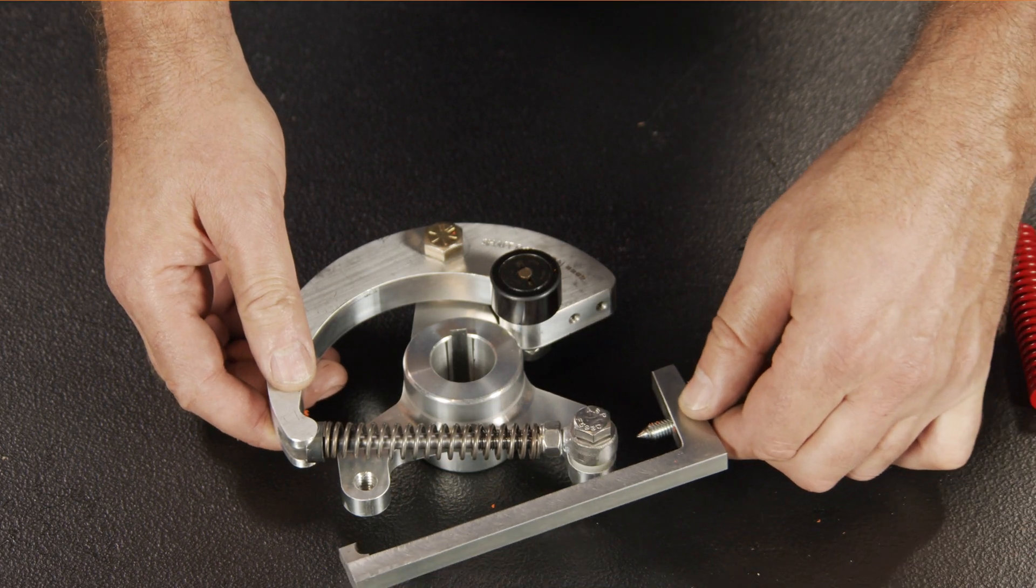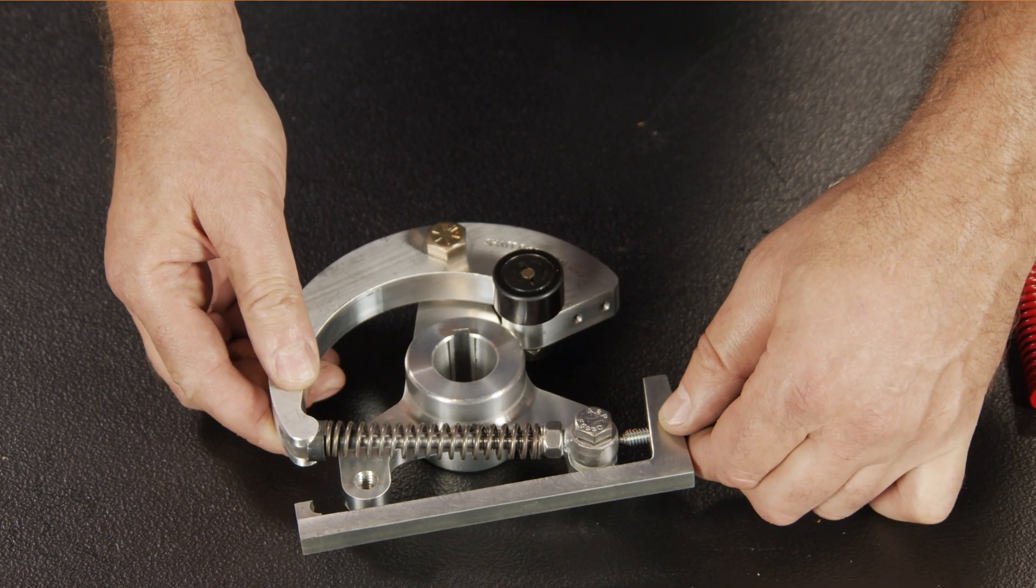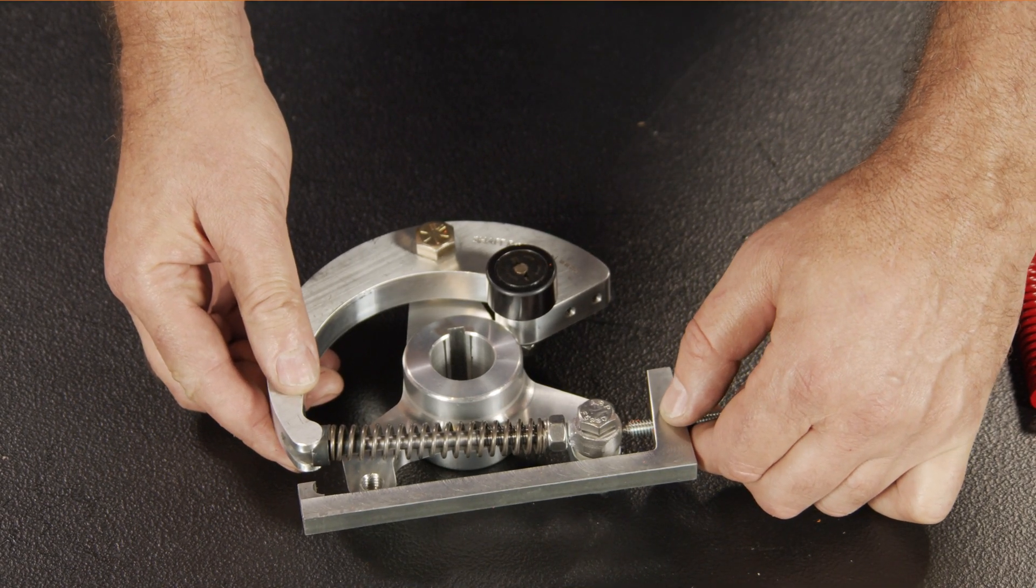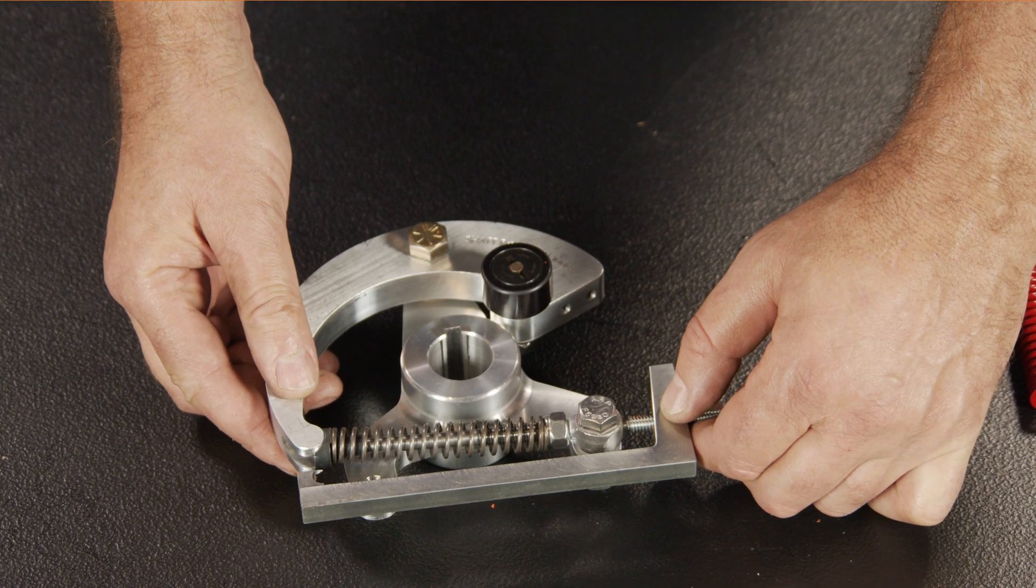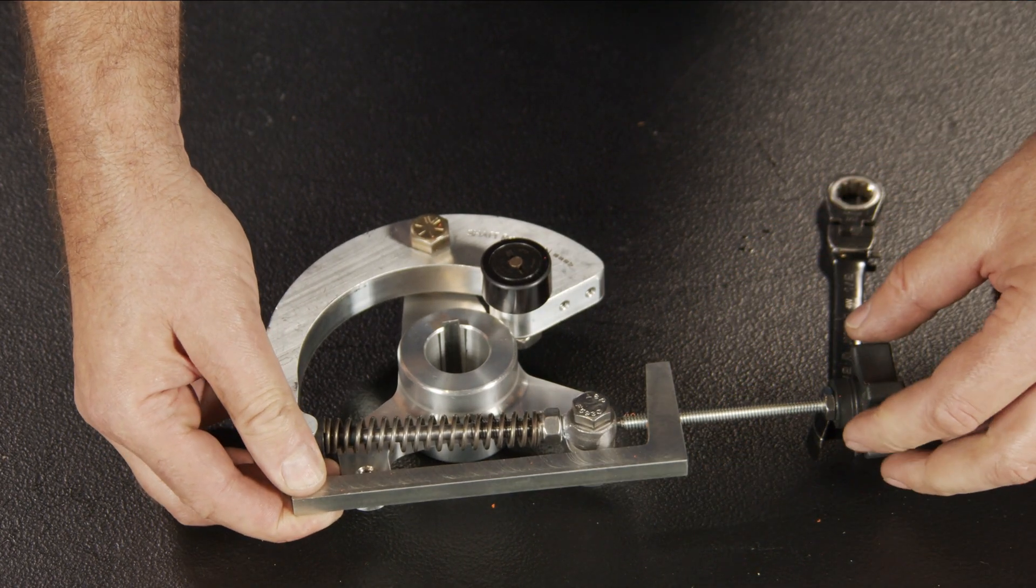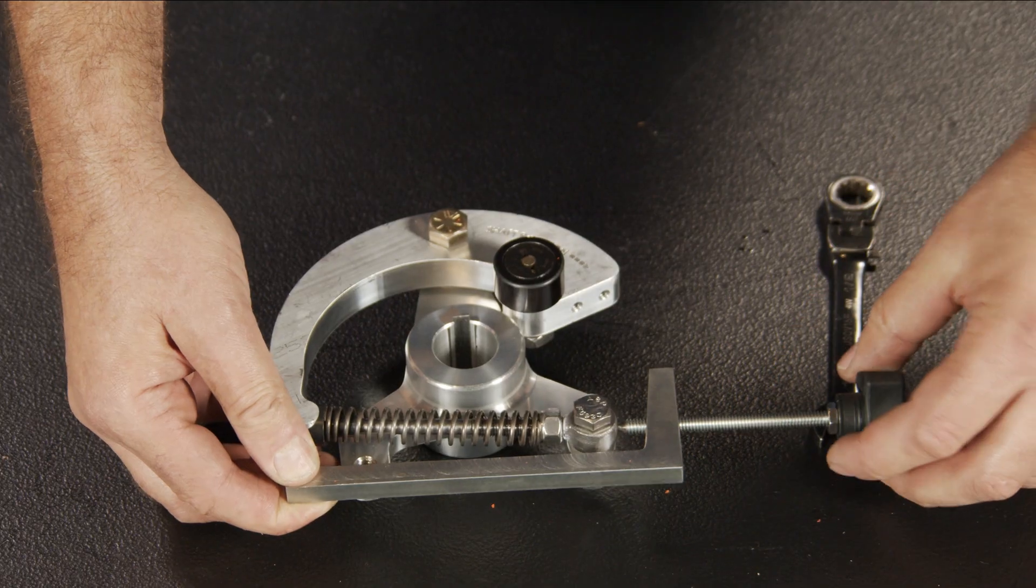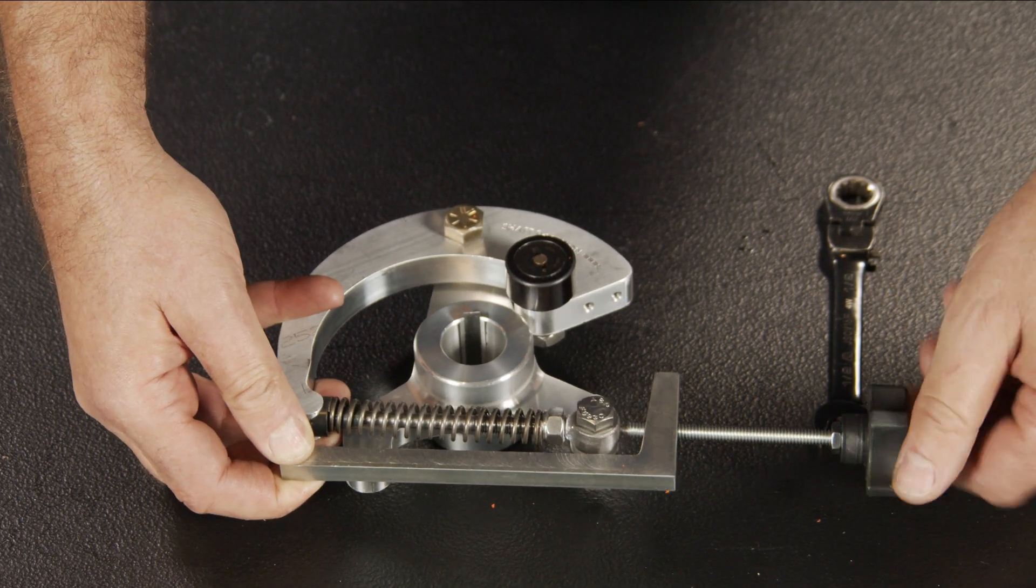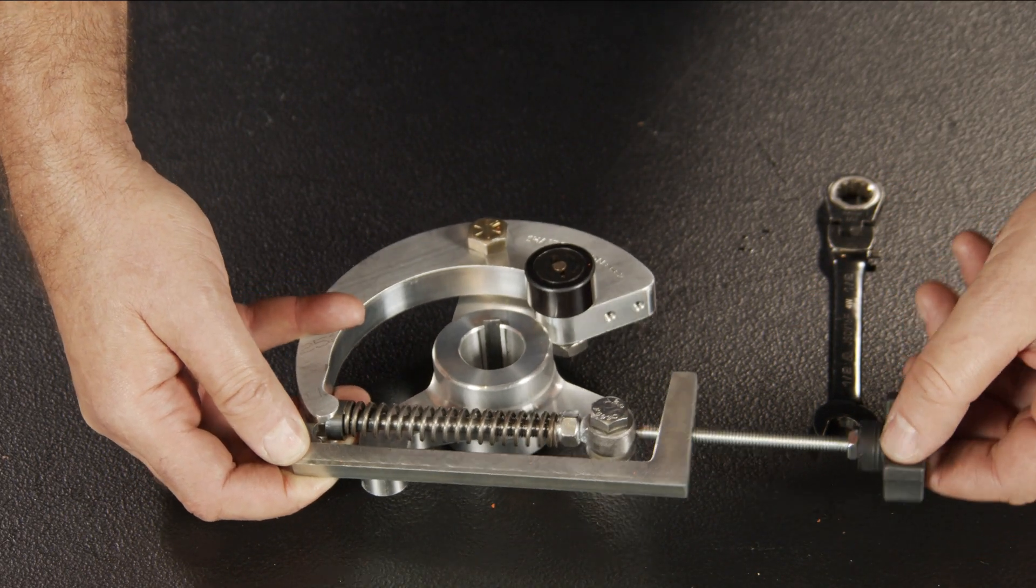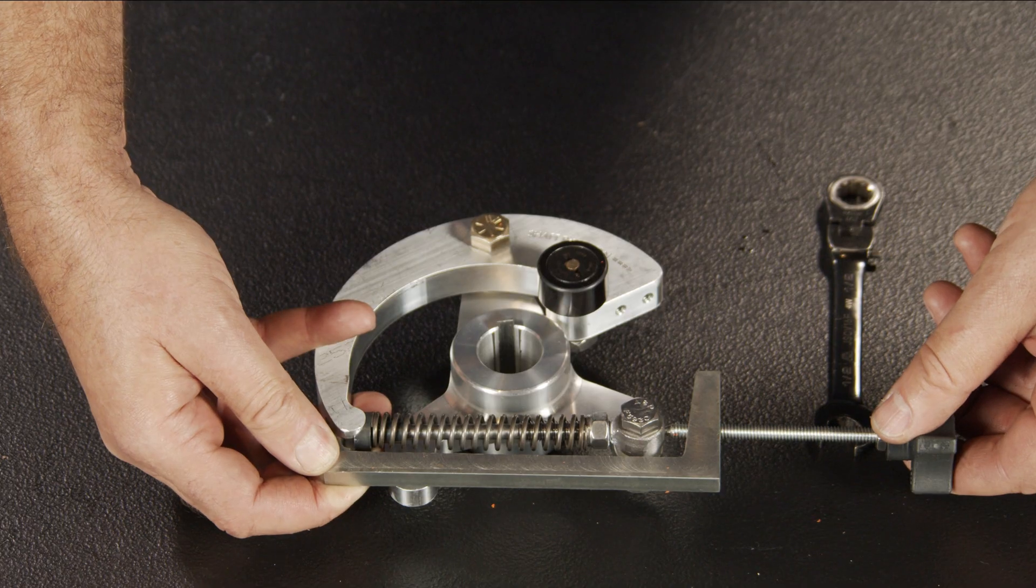Insert the point of the clutch tool's threaded rod into the dimple that is located on the back end of the eye bolt. Rotate the knob until the hook on the clutch tool is in between the notch in the clutch arm so that it can rest on the flat lip of the spring retainer cup.